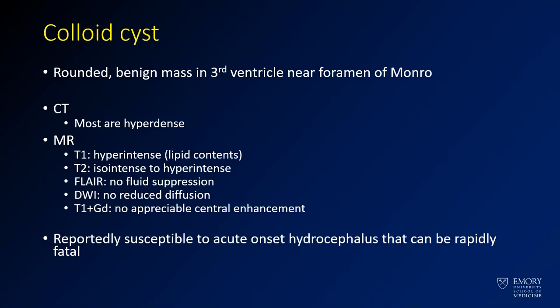This case is an example of a colloid cyst. Colloid cysts are rounded buoyant masses which occur in the third ventricle. Most commonly these are in the anterior third ventricle near the foramen of Monro, although they can occur more posteriorly.